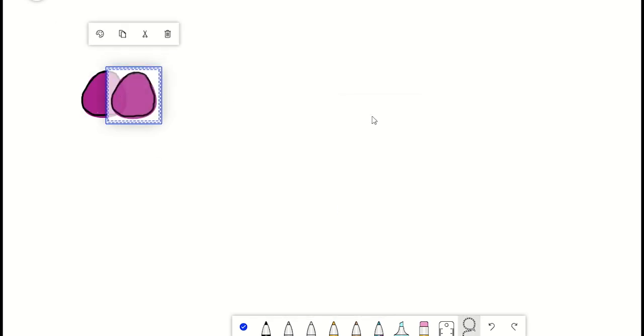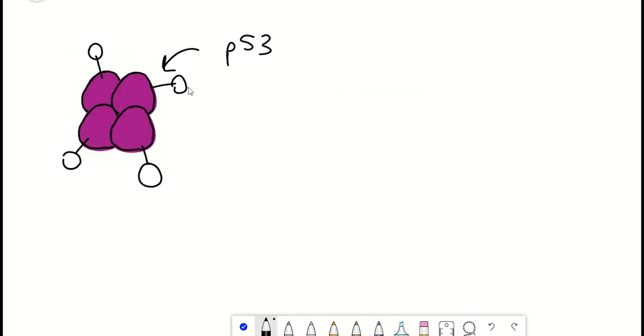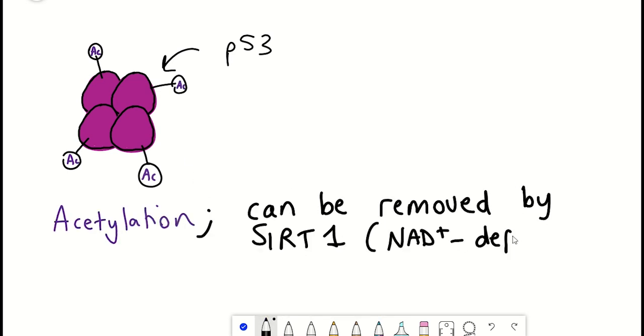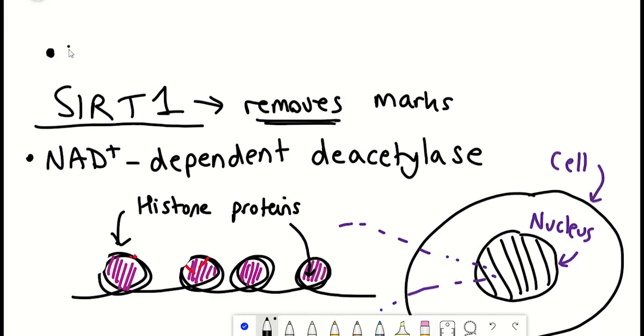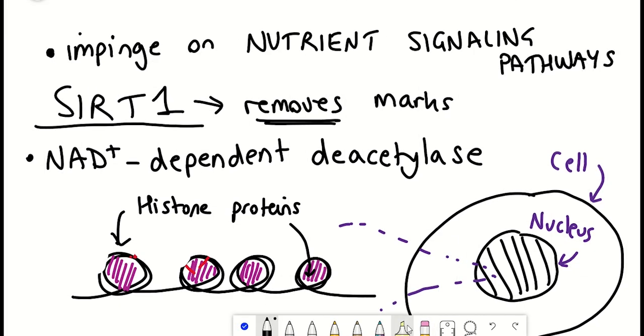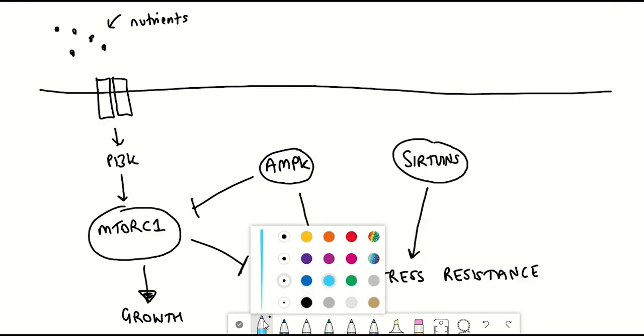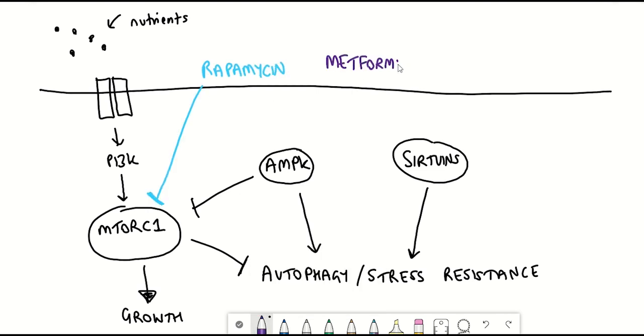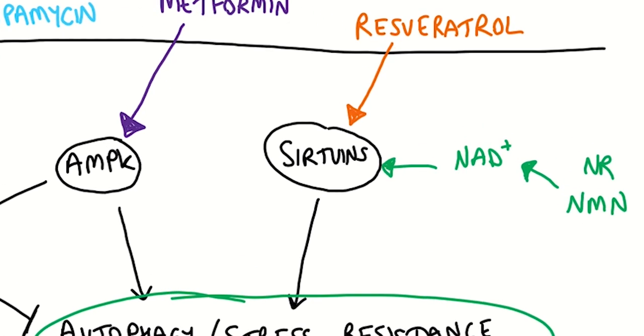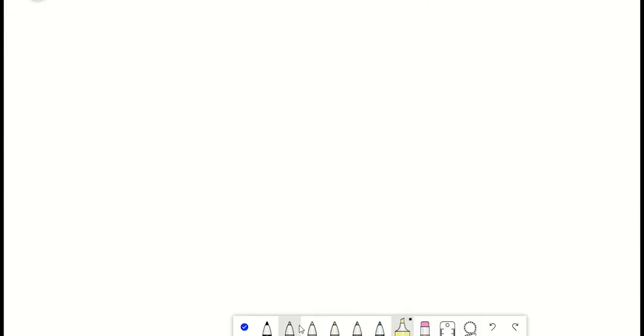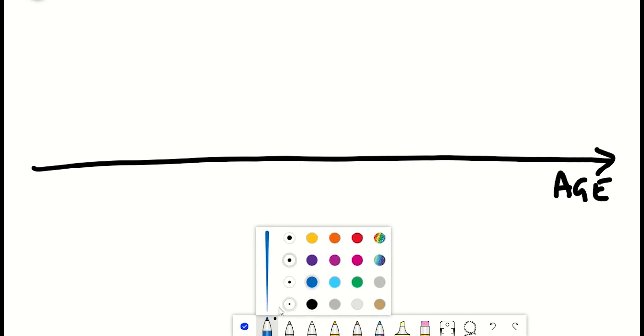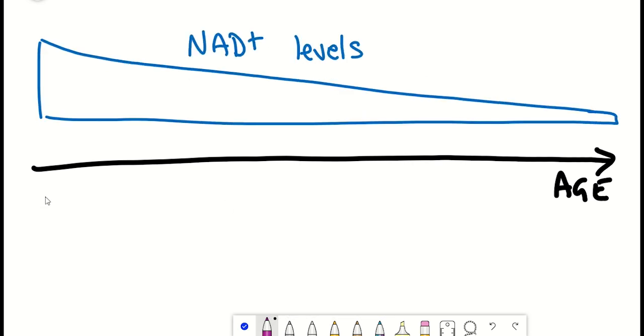Moreover, SIRT1 is also known to deacetylate my favorite protein, p53. By deacetylating a variety of different proteins, SIRT1 can impinge on different nutrient signaling pathways within a cell. Its activity is thought to promote stress resistance and prevent aging. This is further supported by the fact that the levels of NAD+, the cofactor that SIRT1 depends on, decreases during aging and potentially contributes to an age-related reduction in overall sirtuin activity.